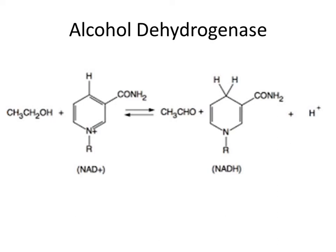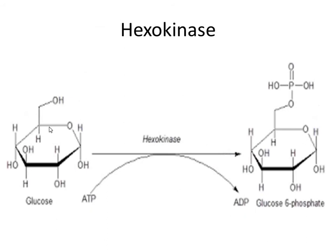Another example of group specificity is hexokinase. Hexokinase assists the transfer of phosphate from ATP to several different hexose sugars. Glucose is converted into glucose-6-phosphate in the presence of hexokinase. Other hexose sugars may convert into their respective 6-phosphates — galactose into galactose-6-phosphate, or fructose into fructose-6-phosphate. The specificity is not for glucose alone but for the hexose sugars.